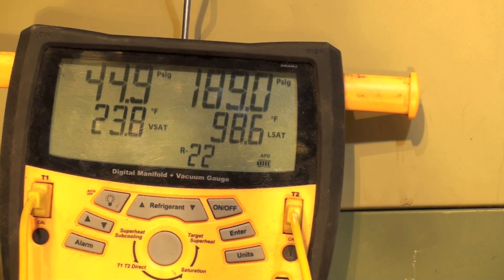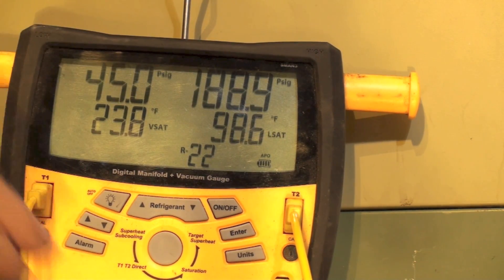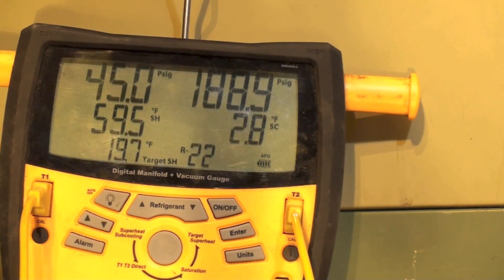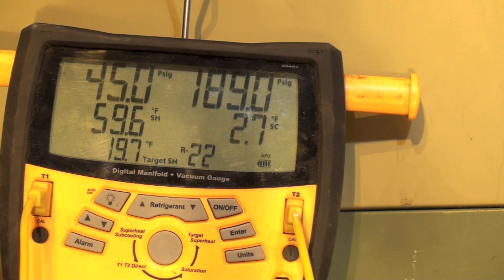I'll give you an idea. We would be evaporating at 23.8. Subcool, 2.7, much too low. It should be between 5 and 10.